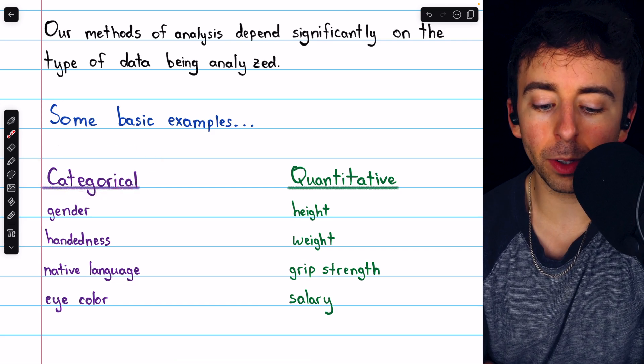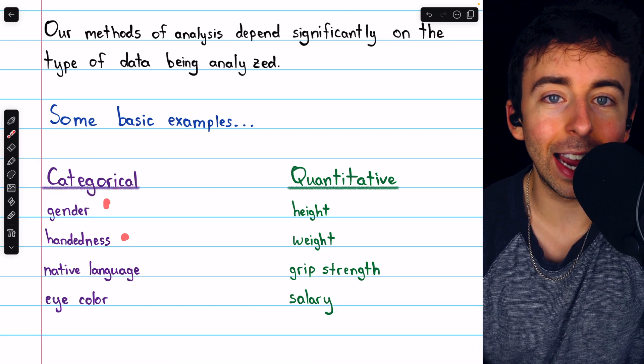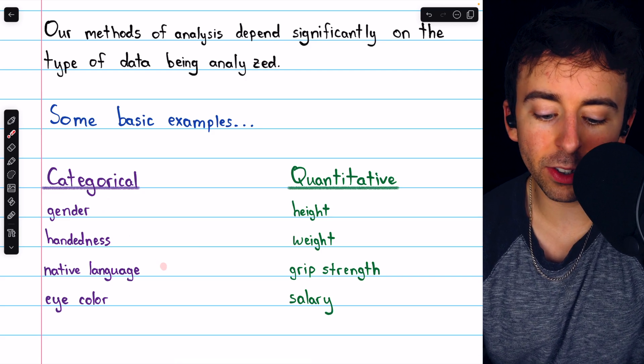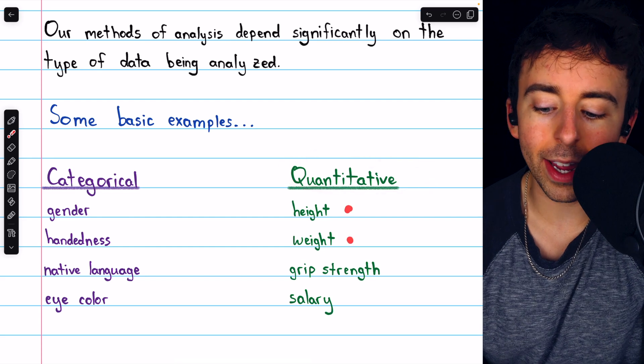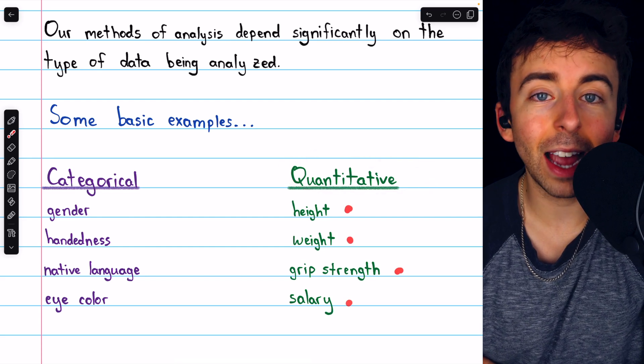A few more rapid-fire examples, some typical categorical variables are gender, left or right-handedness, someone's native language, and eye color. Some typical quantitative variables are height, weight, grip strength, and salary.